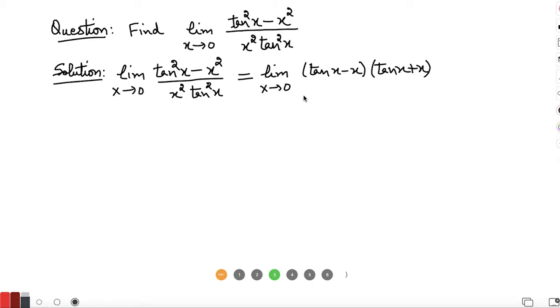From the property we know that the limit as x tends to 0 of tan x by x is 1, or x by tan x is 1. So we will multiply and divide by x squared. I'm writing here x to the fourth and here x squared by tan squared x.